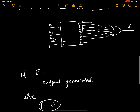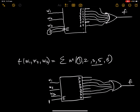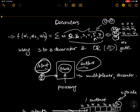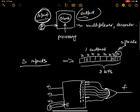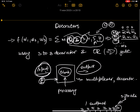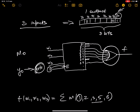Hopefully this was understandable. Just remember: if you get a question to implement a function using a 3-to-8 decoder and an OR gate, look at the minterm indices and connect only the signals with the same index to the gate. For example, if you have m0, connect y0 to the gate. See you in our next tutorial.